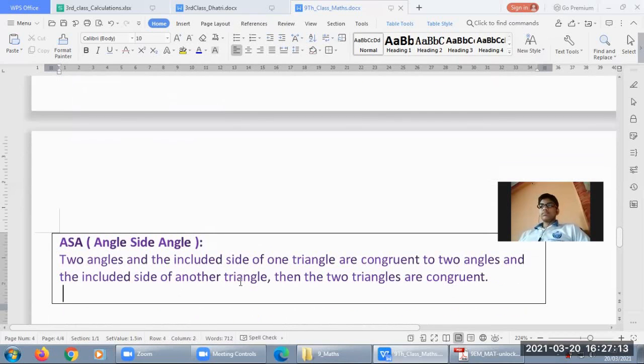The ASA congruent rule: Two angles and the included side of one triangle are congruent to two angles and the included side of another triangle, then the two triangles are congruent.